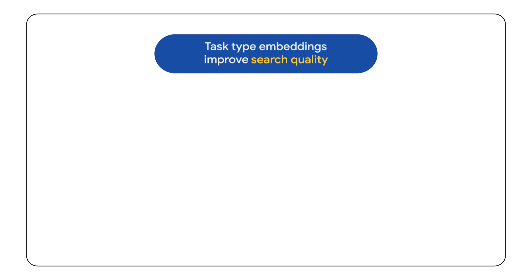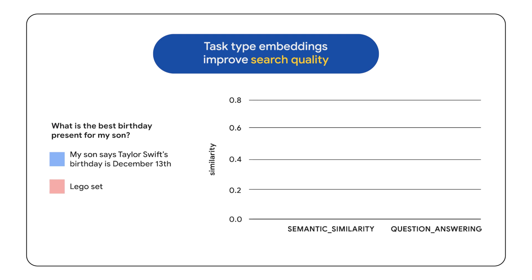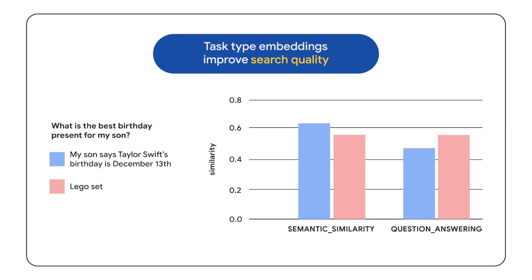This novel embedding model provides optimized performance for each task. Consider the question 'what is the best birthday present for my son?' with two possible answers: 'my son says Taylor Swift's birthday is December 13th' and 'a Lego set.' With semantic similarity, the first answer scores higher because both mention 'birthday' and 'my son' — it's similar to the question but doesn't actually answer it. However, by specifying the 'question_answering' task type, the second answer — a Lego set — receives a much higher similarity score, because the embedding space for question answering captures the question-answer relationships learned by the LLM.